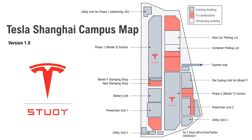Nowadays, there are many videos about gigafactories on the internet. Thanks to the hard work of publishers like UWA for Giga Shanghai and Tobias for Giga Berlin, we got a chance to see those videos and get a feeling about the magnificent buildings and the construction process — and some people can even count the new vehicles on the parking lot. However, a lot of times people run into the same question: what are those buildings for? Which one is which? There's no good map for Giga Shanghai, and that's why I'm trying to create such a map — a campus map.